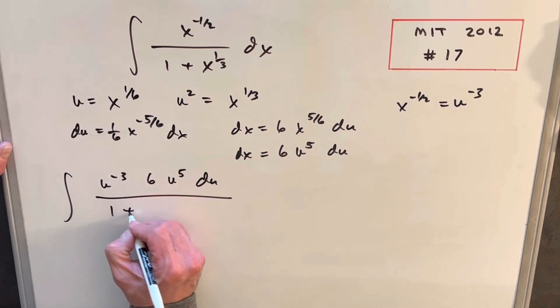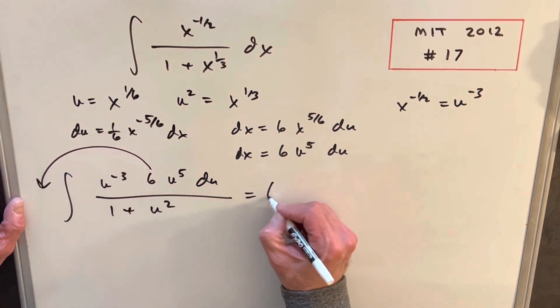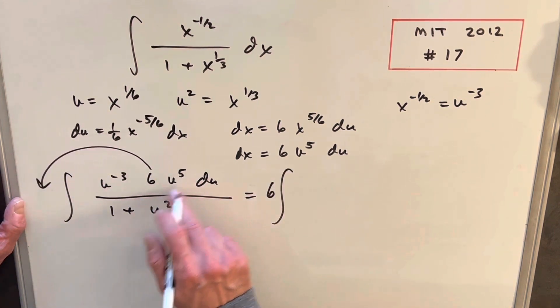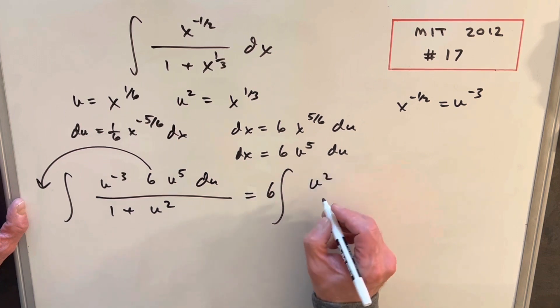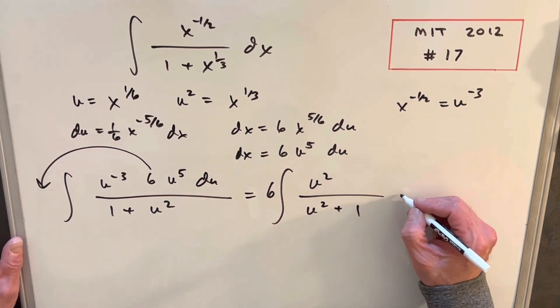And then for our denominator, we're going to have 1 plus u squared. Then cleaning this up a little bit, we'll pull our 6 to the front. So we're going to have 6 u to the 5th times u minus 3 is going to be u squared. And then, I'll just reverse the order, u squared plus 1 in the denominator, du.